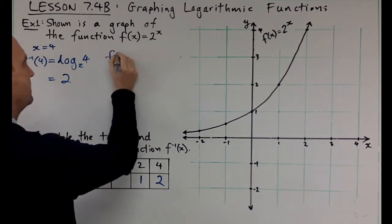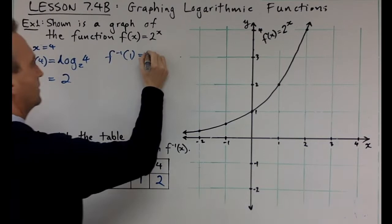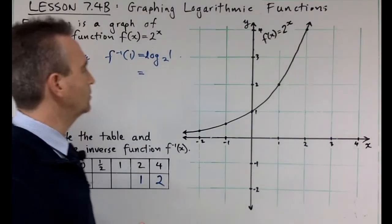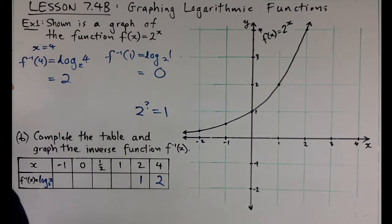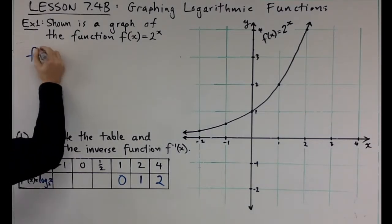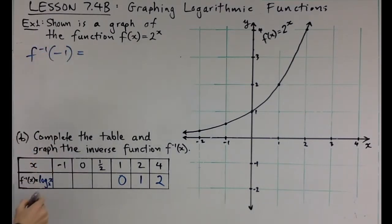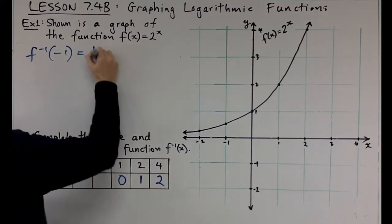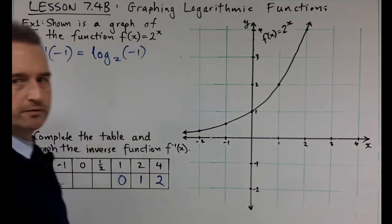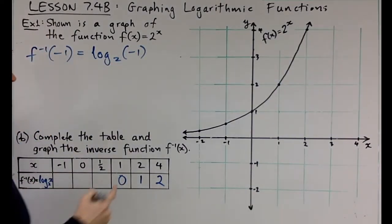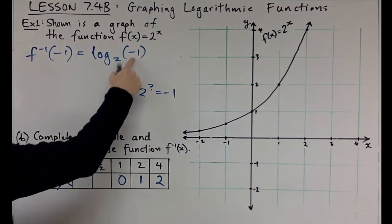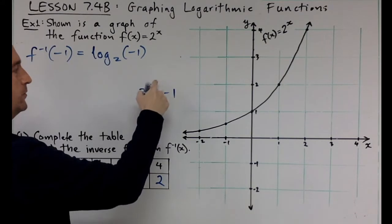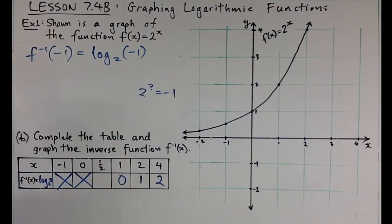For x equals 1: log 1 base 2 means 2 to the power of what equals 1? 2 to the power of 0 equals 1, so log 1 is always 0. Now for negative inputs: log of negative 1 base 2 would mean 2 to the power of what equals minus 1, and that can never happen — it's undefined. Similarly, log of 0 base 2 would mean 2 to the power of what equals 0, which is also impossible. So both are undefined.